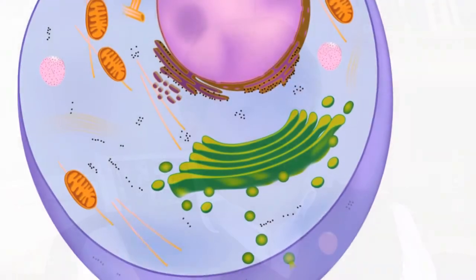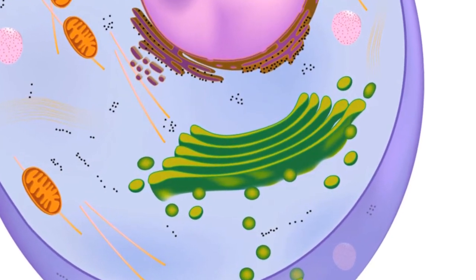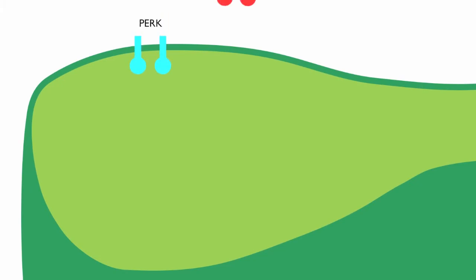The unfolded protein response is mediated by three transmembrane sensors localized in the endoplasmic reticulum. One of them is called PERK, which is a kinase. There is another kinase called IRE1, and a third sensor is called ATF6.